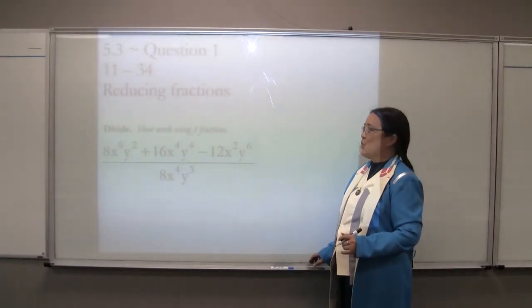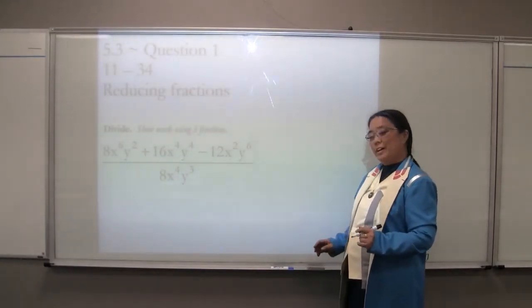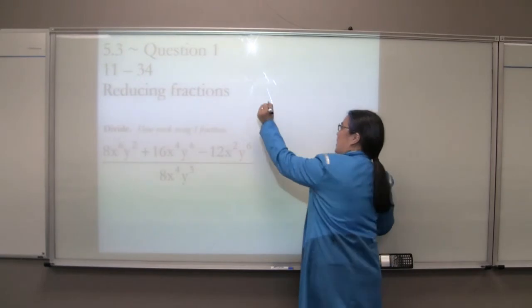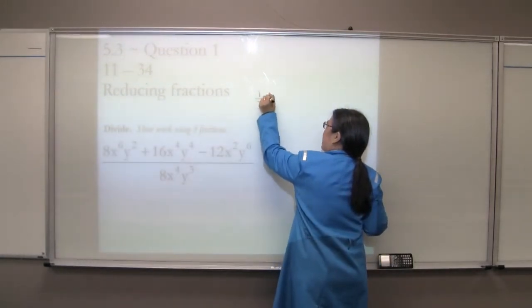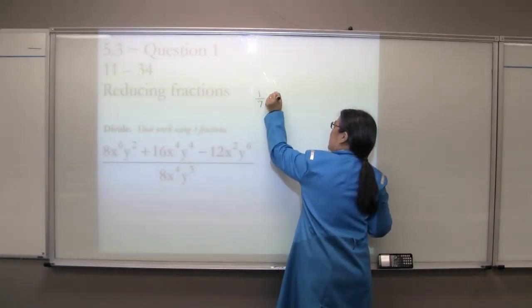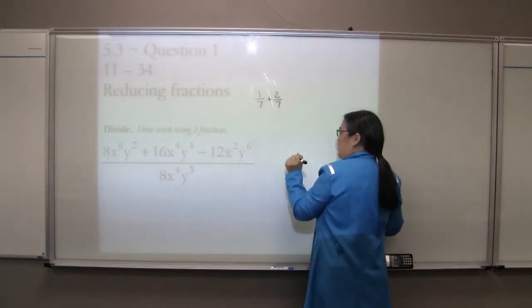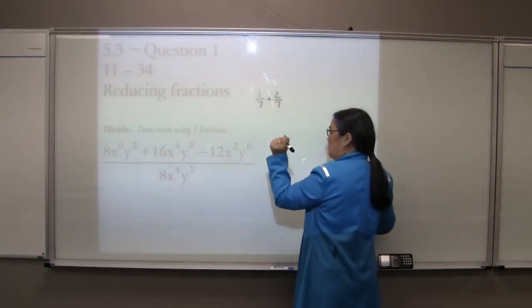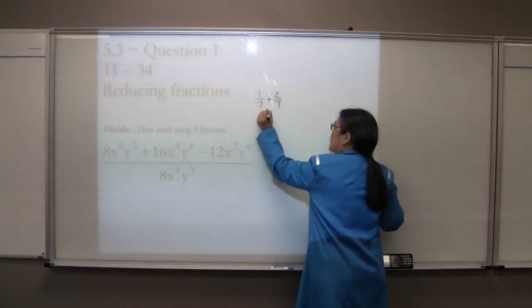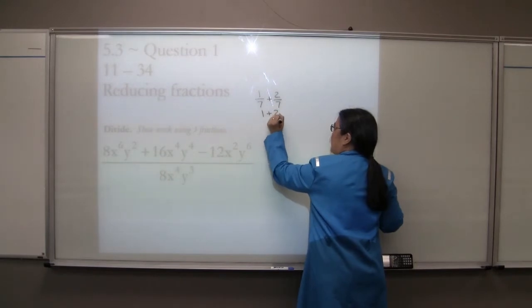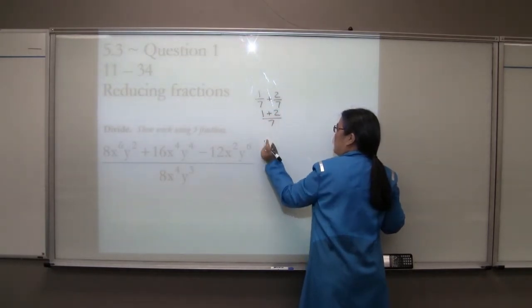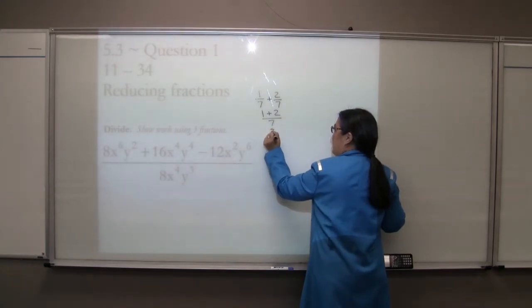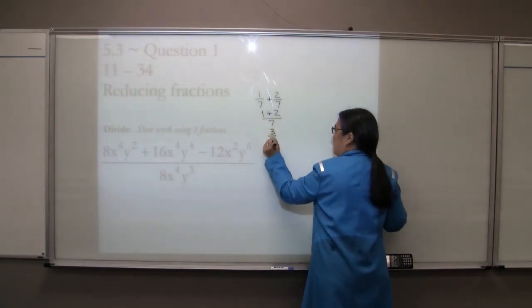Chapter 5, Section 3, Question 1. You'll remember in previous classes that if we had 1/7th plus 2/7ths, we would get 3/7ths. But when we were showing our work to support us in getting ready for Chapter 6, we would write it as 1 plus 2 over the common denominator 7, and then we would get 3/7ths.